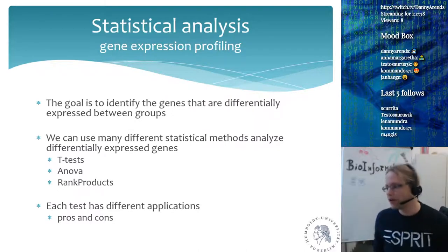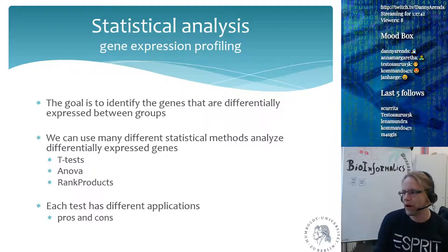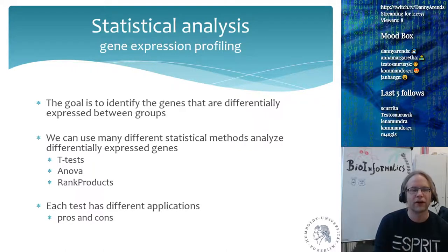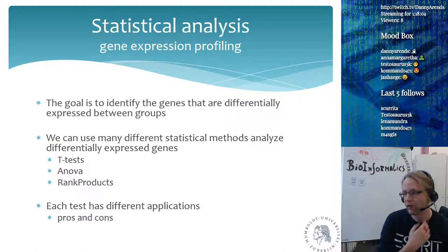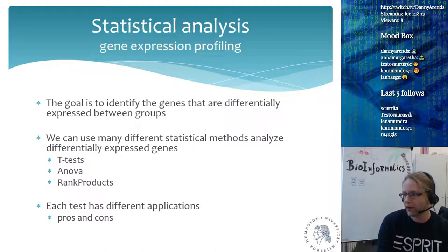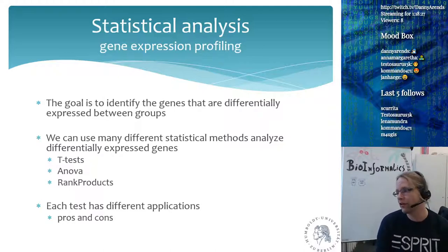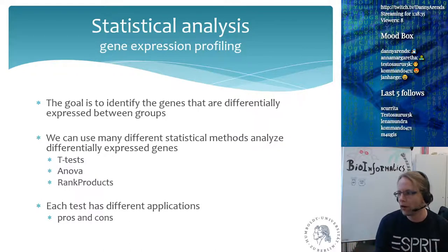That covers normalization of microarrays. For the statistical analysis, the goal is to identify genes differentially expressed between groups — for example, ten normal livers versus ten cirrhotic livers. Many statistical methods can be used, and none are perfect. Each test has different applications and pros and cons. Building a statistical model means specifying what you think is going on in the data and testing which model fits best.